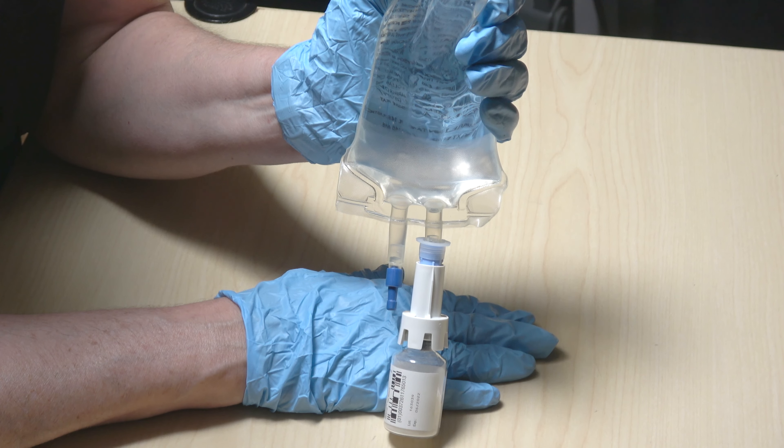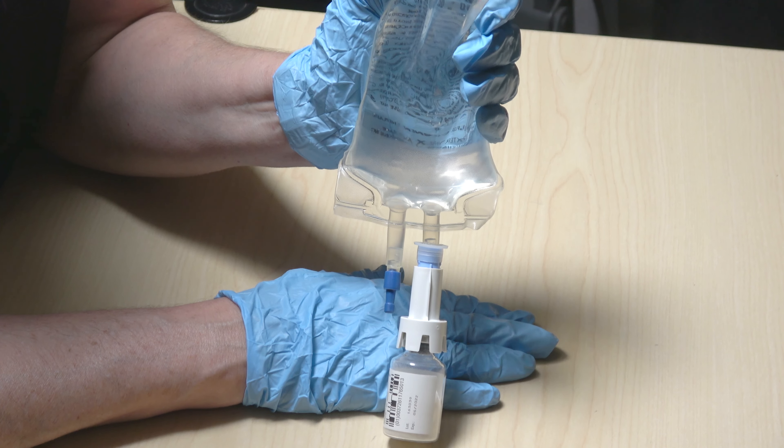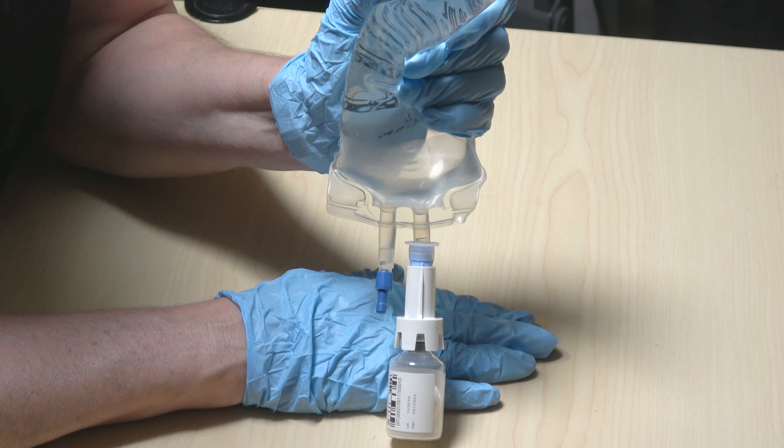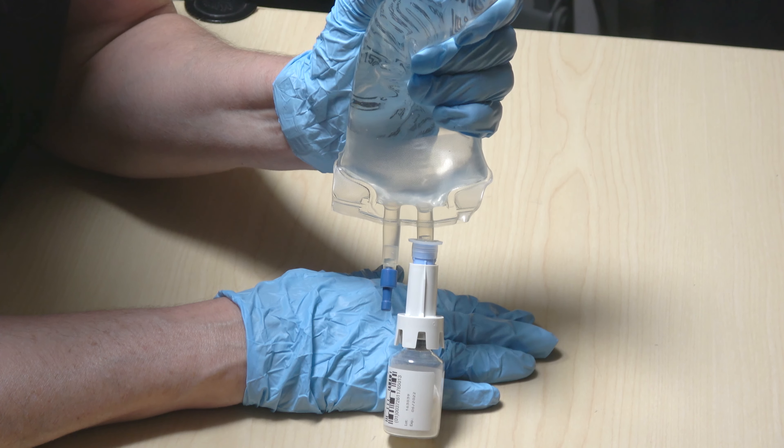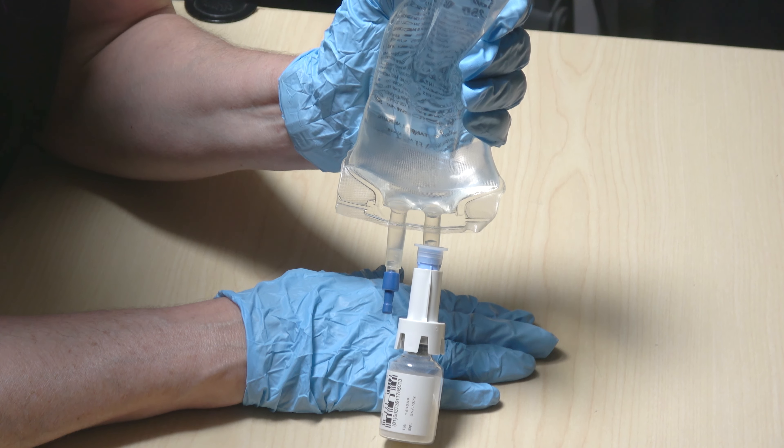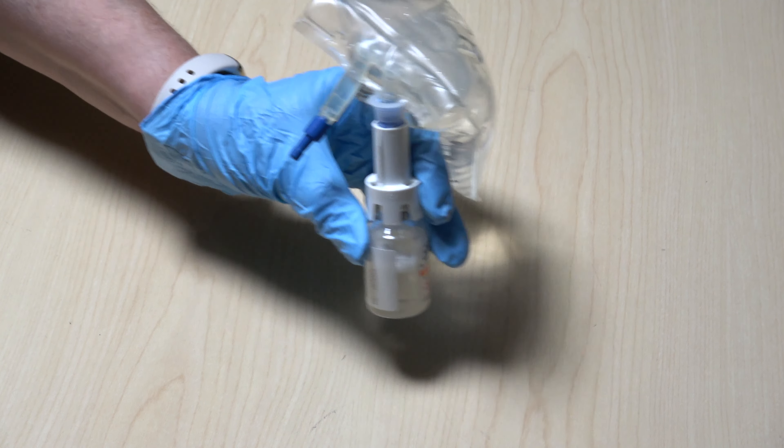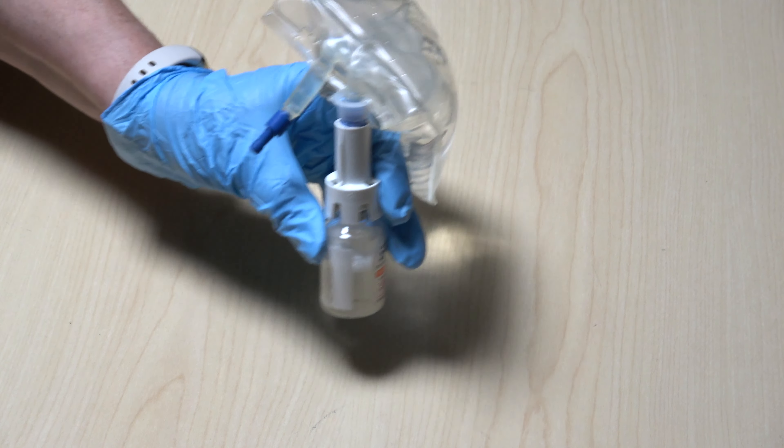Step five: squeeze the mini bag and inject solution into the powder. Continue squeezing and releasing the mini bag until the vial is two-thirds to three-quarters full. Swirl the vial to mix and dissolve the powder. Do not shake the vial.